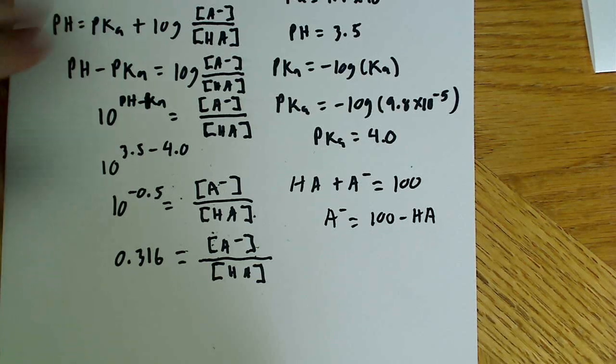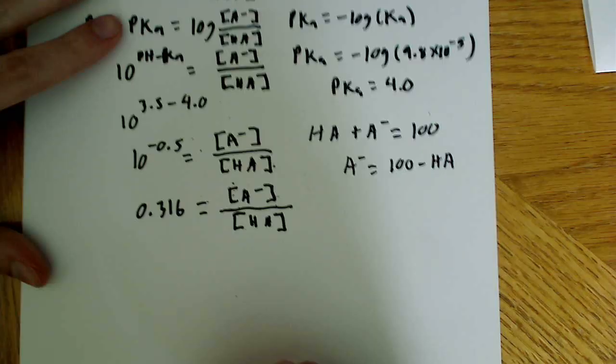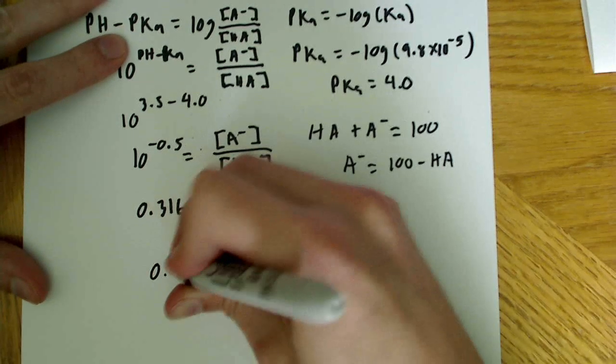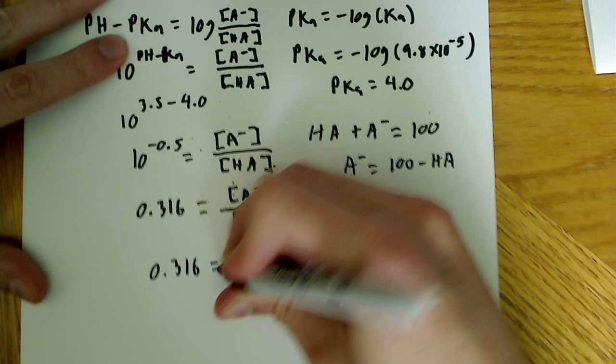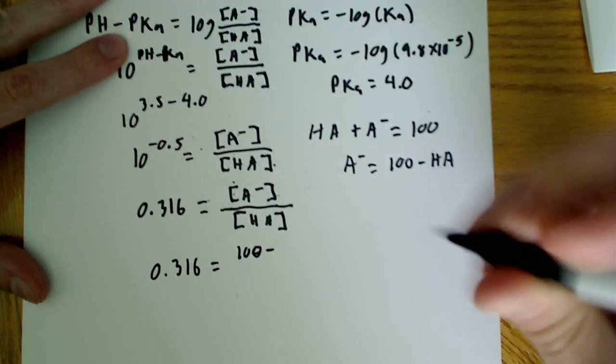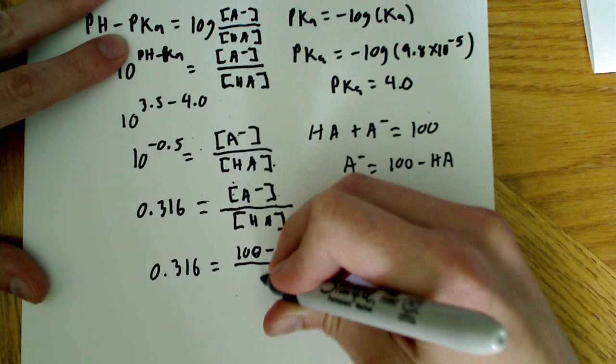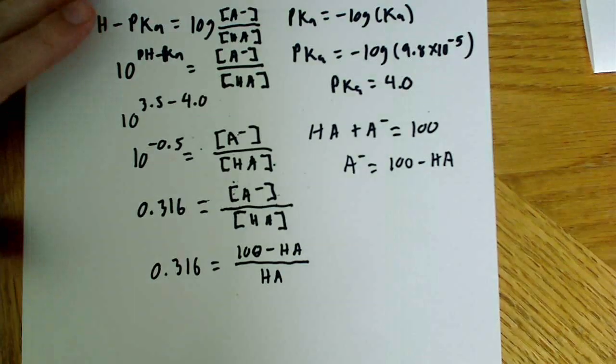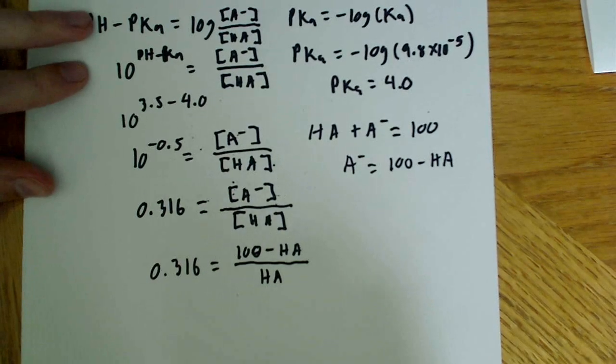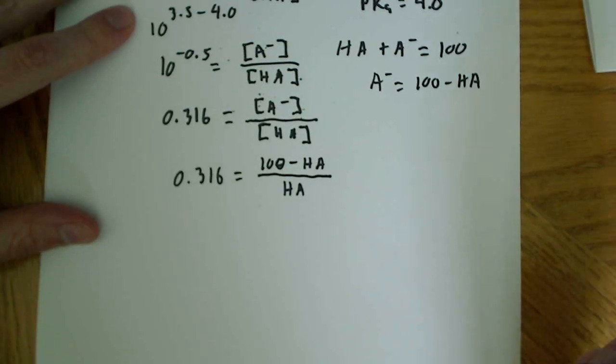Now, I can substitute that into the equation over here on the left, and I can say 0.316 is equal to 100 minus HA all over HA. Now, from here, again, it's just going to be more algebra. I'm just going to do some more algebra, and we're going to solve for HA.